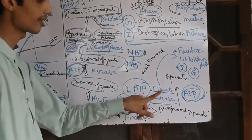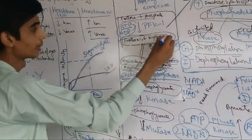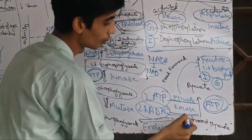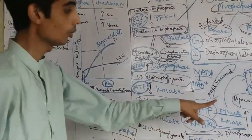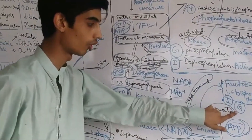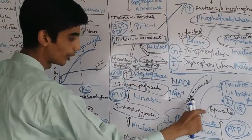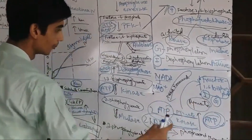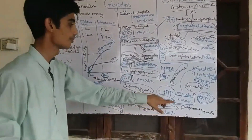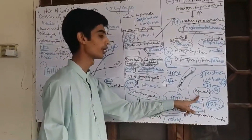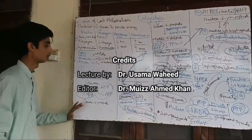The last step — phosphoenolpyruvate to pyruvate by pyruvate kinase — is the third regulatory step of glycolysis. Fructose 1,6-bisphosphate activates pyruvate kinase in a feed-forward regulation mechanism. Regarding hormonal regulation: insulin dephosphorylates pyruvate kinase, activating it to convert phosphoenolpyruvate into pyruvate. Glucagon phosphorylates and inactivates pyruvate kinase, inhibiting glycolysis. This concludes the overview of glycolysis and its regulatory factors.